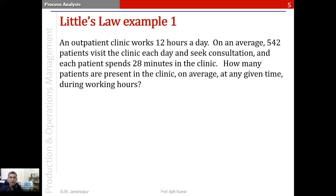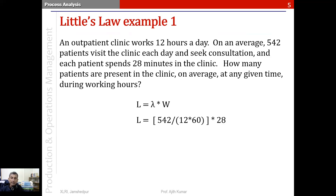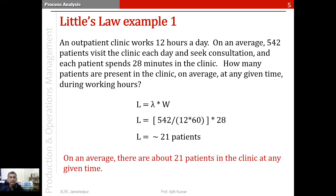The first example is an outpatient clinic that works 12 hours a day. On average, 542 patients visit each day and a patient spends about 28 minutes in the clinic. Applying Little's Law — L = λW — λ is 542 divided by (12 × 60) patients per minute, multiplied by W = 28 minutes. This gives L ≈ 21 patients. At any given point during working hours, there are about 21 patients in the clinic on average.